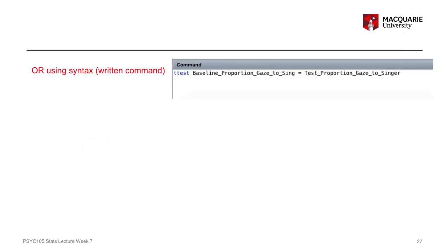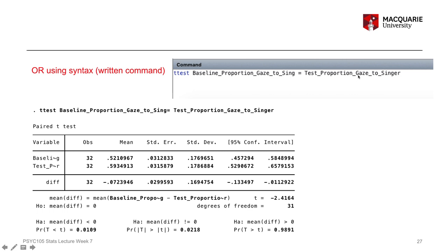If we want to do the same thing using the written command syntax, it's relatively straightforward — it's just the t-test command, the same as last week: 'ttest variable_one = variable_two'. That, or using the menu system, will give us this output, which looks really similar to our independent samples t-test last week because it's a very similar kind of test.